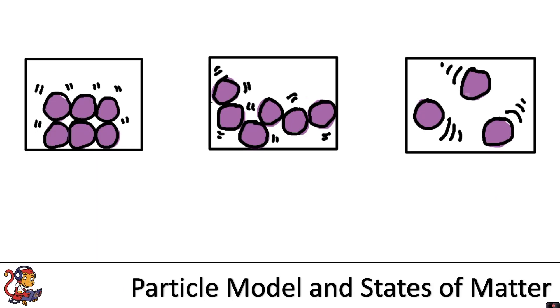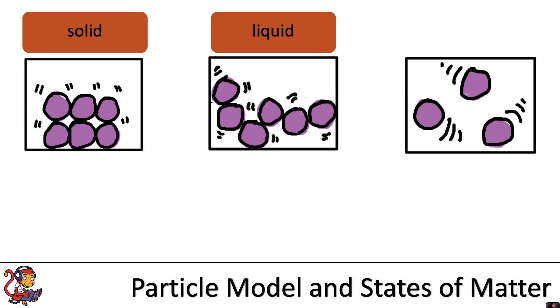In the previous video we looked at the particle models for the three states of matter: solid, liquid, and gas. Depending on the temperature, a substance might be found as a solid, a liquid, or a gas. For example, at room temperature water is found as a liquid, but if you cool it down in the freezer it will turn into a solid, it will turn into ice. Or if you heat it up it will turn into a gas by turning into water vapor.